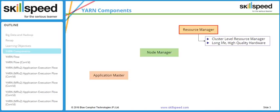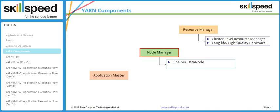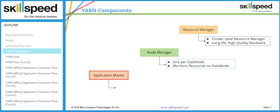The Resource Manager is usually built on industry-standard servers. The Node Manager is a slave daemon, typically one per data node, and its duties include monitoring the resources on that particular data node. The Application Master is dynamically launched one per application and is short-lived — once your application is completely executed, the Application Master is dynamically destroyed. It lives only as long as the application is executing inside your cluster.